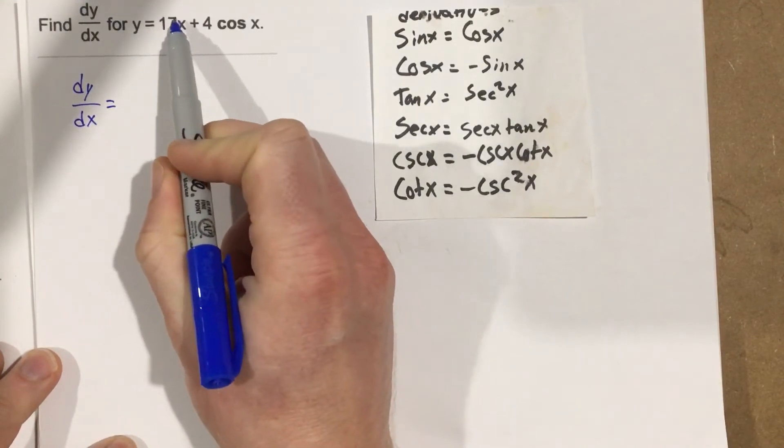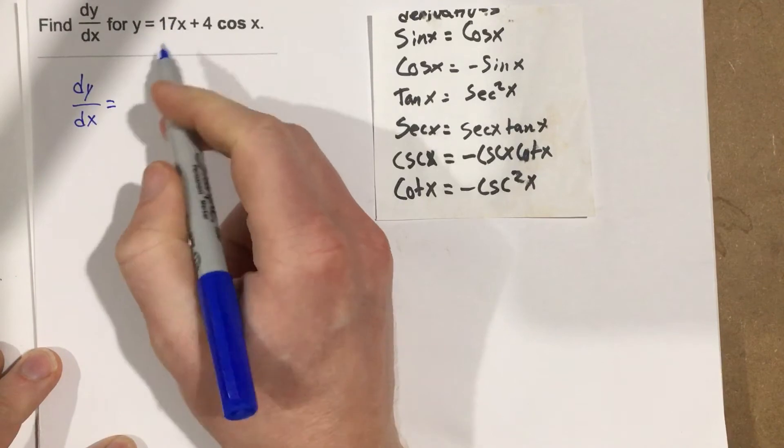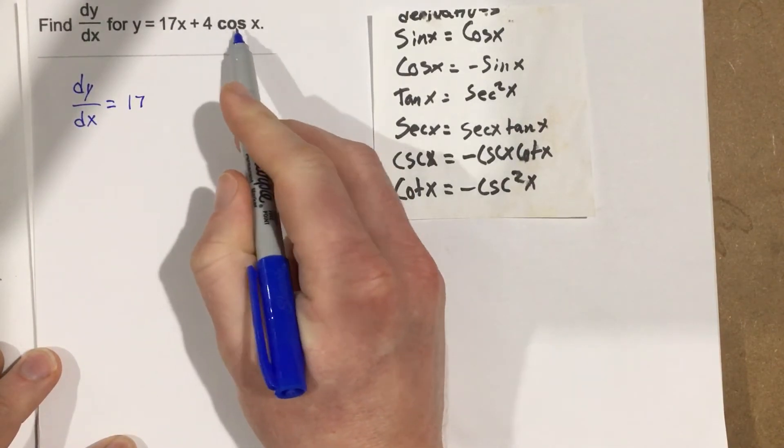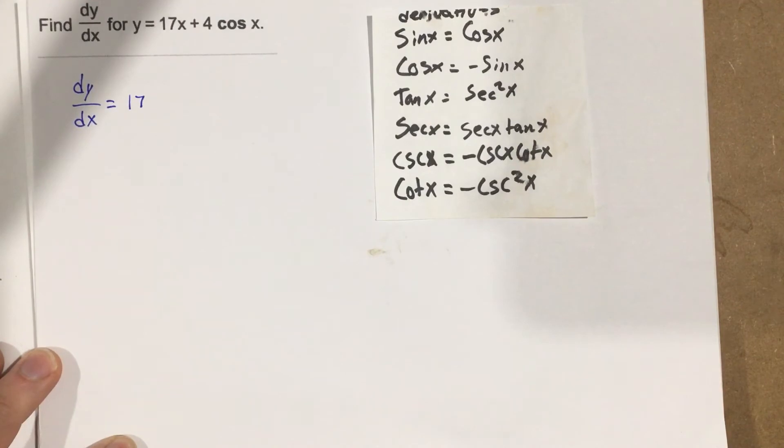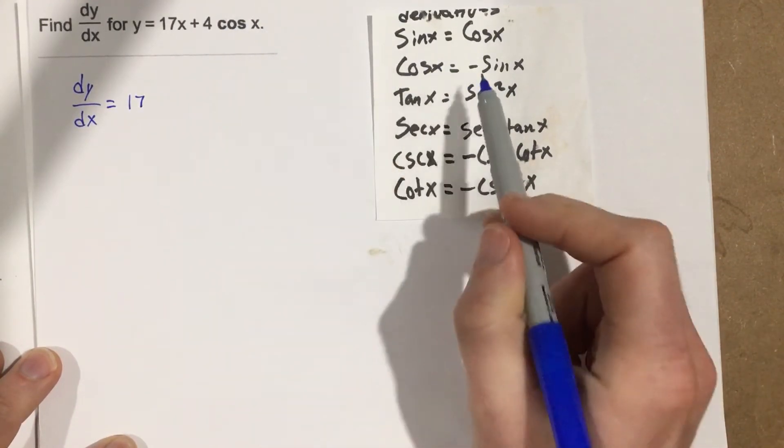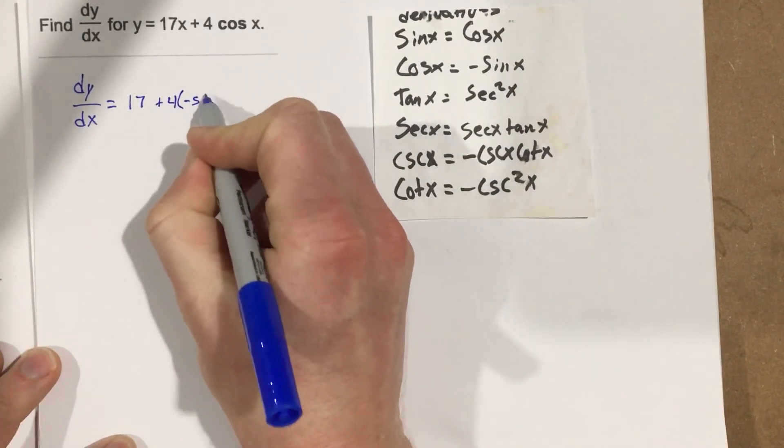Well, I can do the derivative of each part separately because of the addition. So the derivative of 17x is just 17, and the derivative of 4 cosine x, when I take the derivative of cosine, I end up with negative sine. So this will be plus 4 times negative sine x,